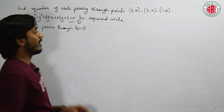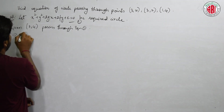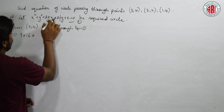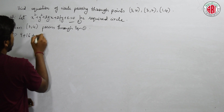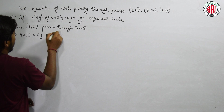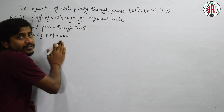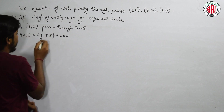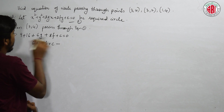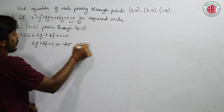We have to substitute this point in this equation. Therefore, 3 squared is 9, 4 squared is 16, 2 times g times 3 gives 6g, 2 times f times 4 gives 8f, plus c equal to 0. Let us put all g, f, c on the left side and send the constants to the right side. That will be 6g plus 8f plus c equal to minus 25. Let us consider this as equation 2.